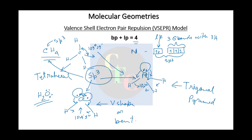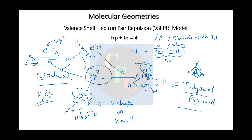Now, what is the difference between tetrahedral and trigonal pyramidal? In a tetrahedron, all the apex positions are equidistant and equal. But in a pyramid, the height is shorter — the apex has come down because there is no bond there, only a lone pair in the case of the trigonal pyramid.